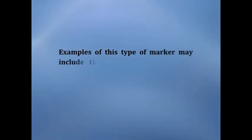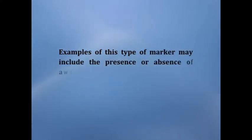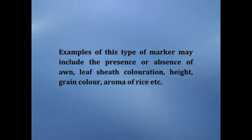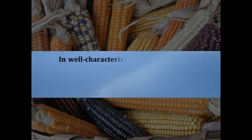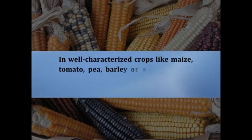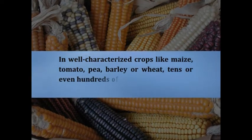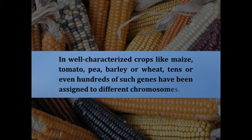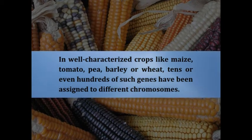Examples of these types of markers may include the presence or absence of awns, leaf and seed coloration, height, grain color, aroma of rice, etc. In well-characterized crops like maize, tomato, pea, barley, or wheat, tens or even hundreds of such genes have been assigned to different chromosomes.